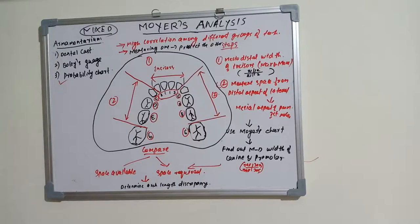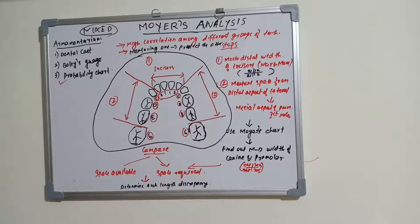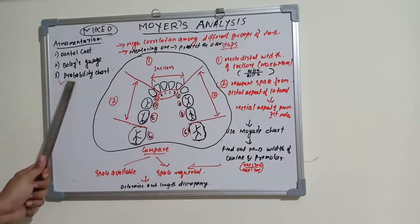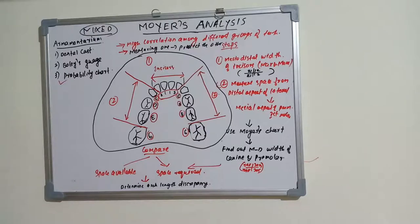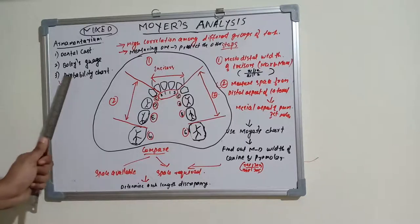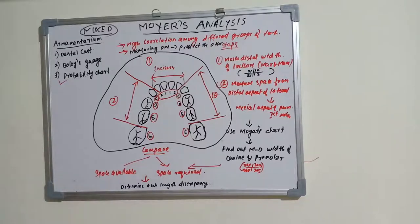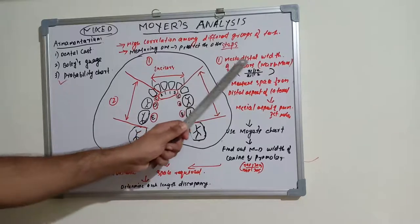The armamentarium includes a dental cast, Willis gauge, and a probability chart. The main thing is the probability chart — we are going to predict the future teeth space requirement using this probability chart. Step one is to measure the mesiodistal width of the incisors.